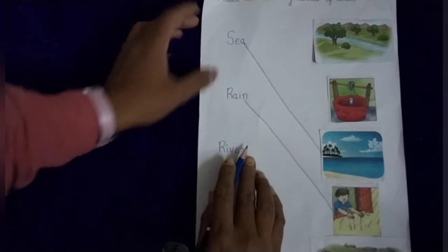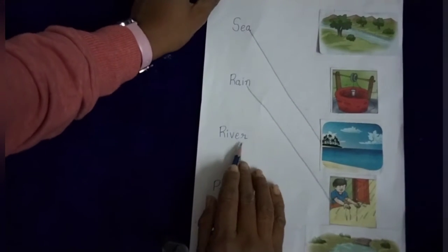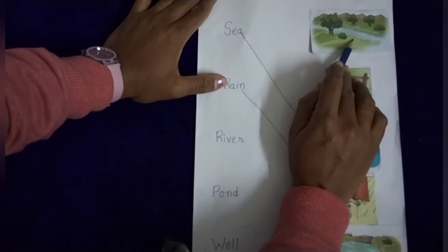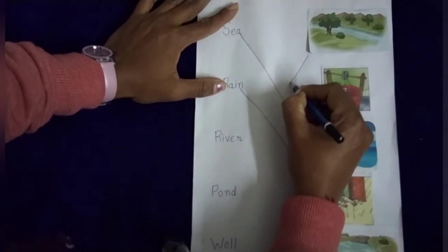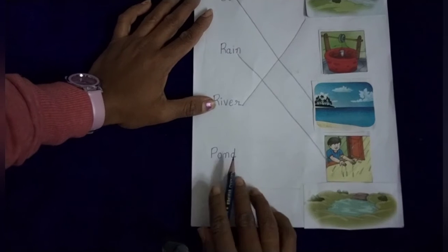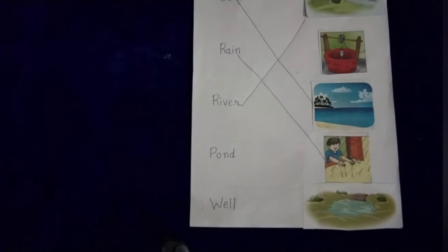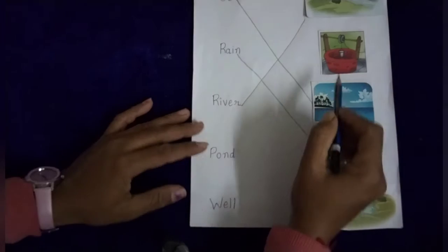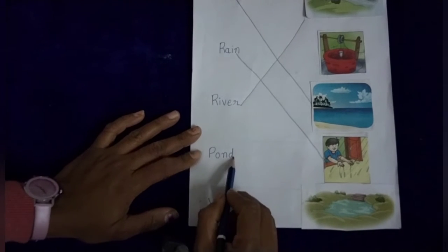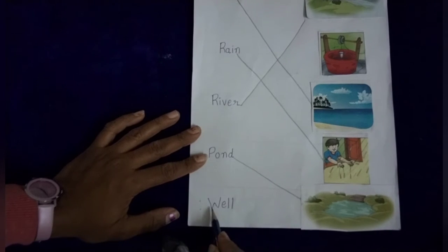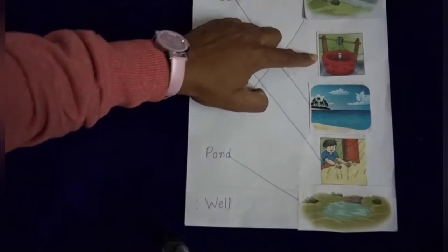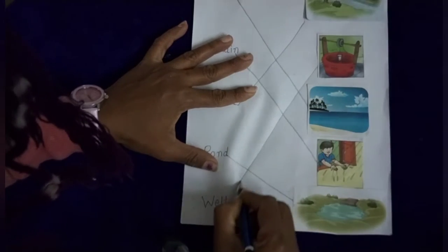R-I-V-E-R. River. So students, there is the picture of river. Is this river? Yes, this is the picture of river, so we match it. Next is P-O-N-D. Pond. So where is the picture of pond? Is this pond? No. Is this pond? Yes, this is the picture of pond, so we match it. And the last name: W-E-L-L. Well. This is the picture of well, so we match this picture with its name.